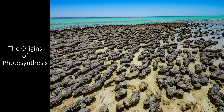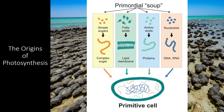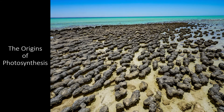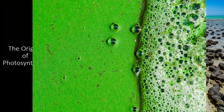Around 3 billion years ago, the Earth was water, rock, and a very simple atmosphere made mostly of nitrogen and carbon dioxide. If there was any oxygen, it was certainly not enough to sustain modern organisms. Early cells formed in the primordial soup of the ocean, and some of these cells evolved the ability to photosynthesize. These organisms were the earliest version of cyanobacteria.